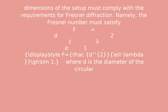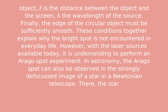Dimensions of the setup must comply with the requirements for Fresnel diffraction. Namely, the Fresnel number must satisfy F = d² / (l · λ) ≳ 1, where d is the diameter of the circular object, l is the distance between the object and the screen, and λ is the wavelength of the source.